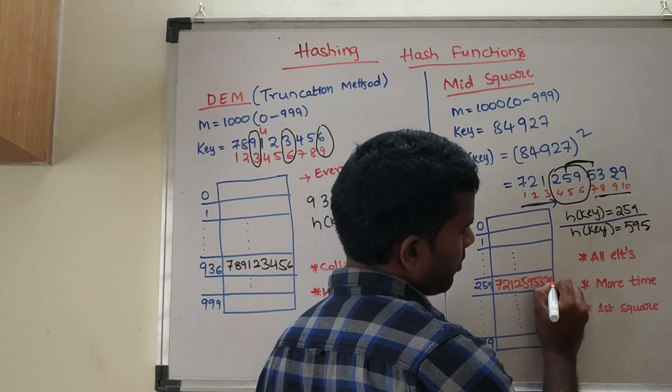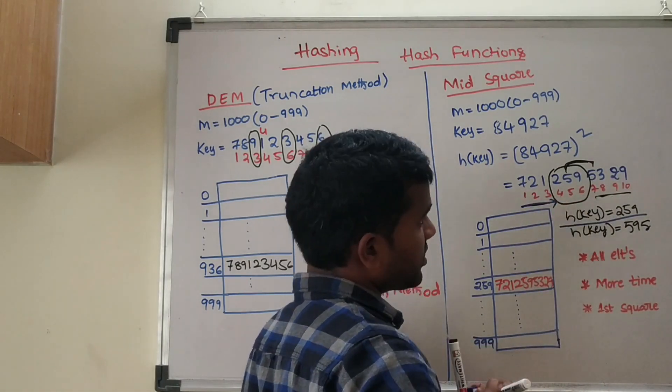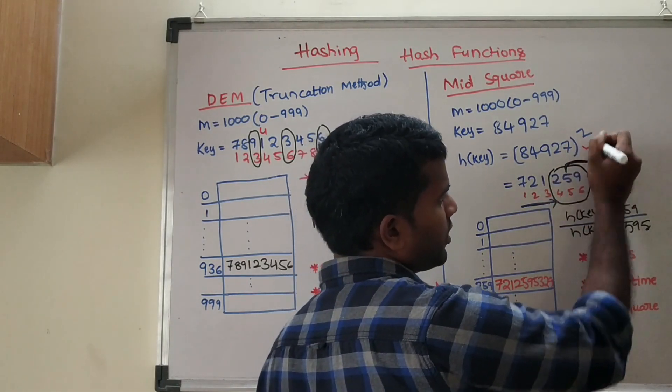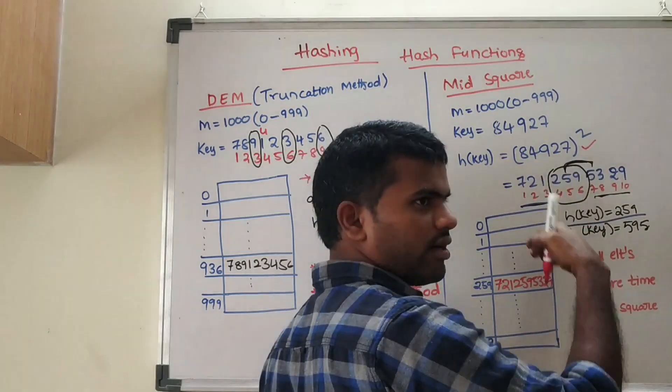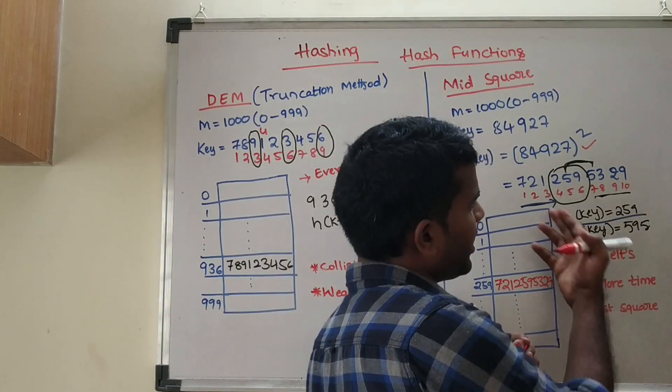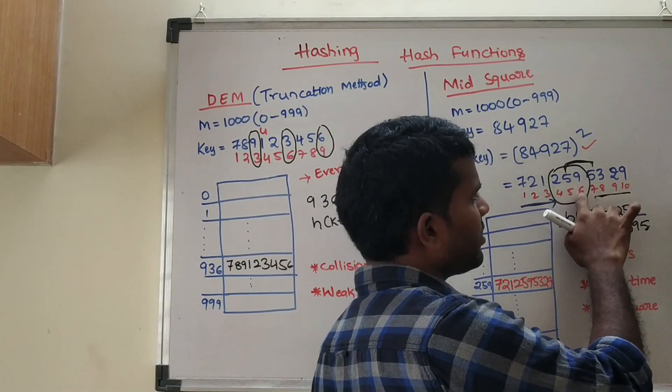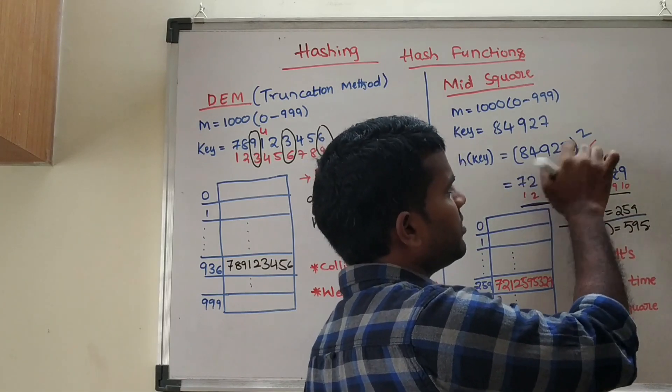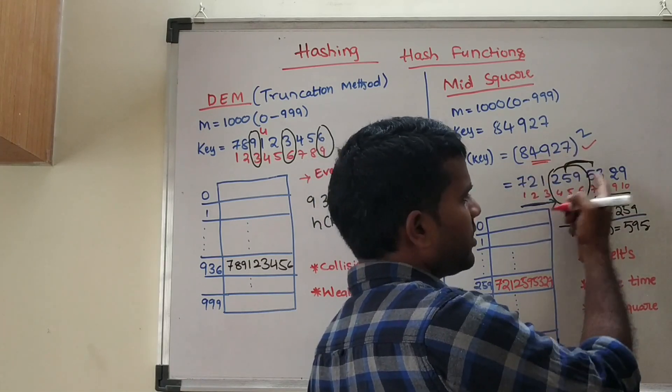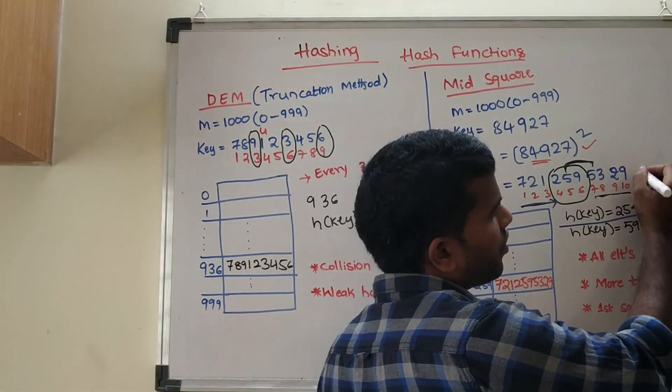Here all elements are participating. If you are squaring this number, all elements multiply together, so all elements participate. You cannot fix the middle elements - they are fixed in position, but if you change any one digit of the original number, you won't get the same result.